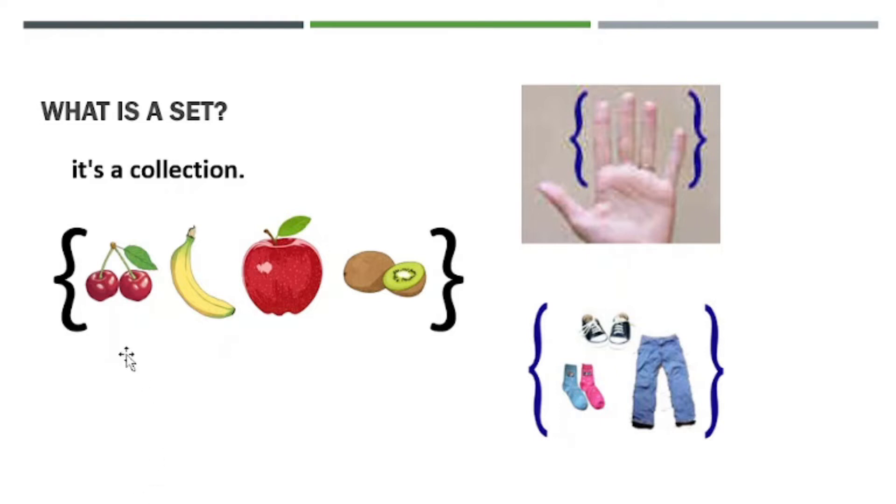For example, fruits. We can list a set of fruits. Or the set of our clothes where we have pants, socks, and shoes, right? So that's one set. As you can see, when we say set, they have a common property.